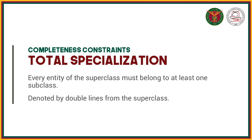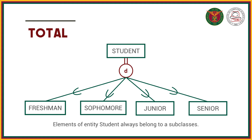Moving on to completeness constraints. We have total specialization: every entity of the superclass must belong to at least one subclass, denoted by double lines from the superclass. For example, entity student has a double line, so this is total specialization, with four subclasses: freshman, sophomore, junior, and senior.